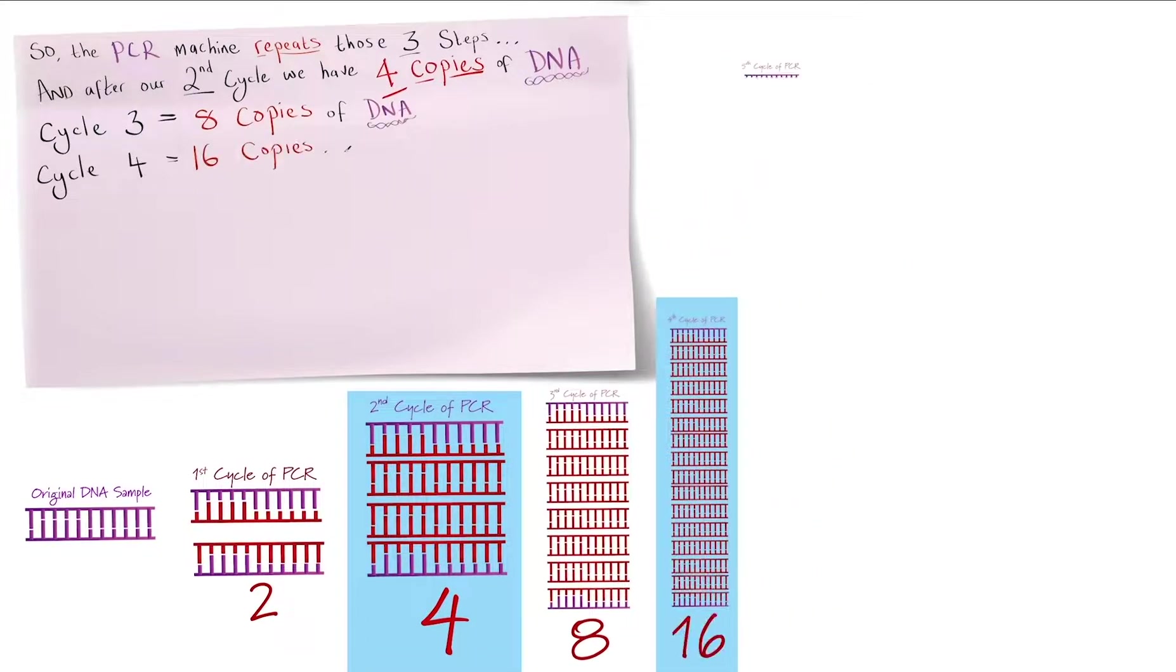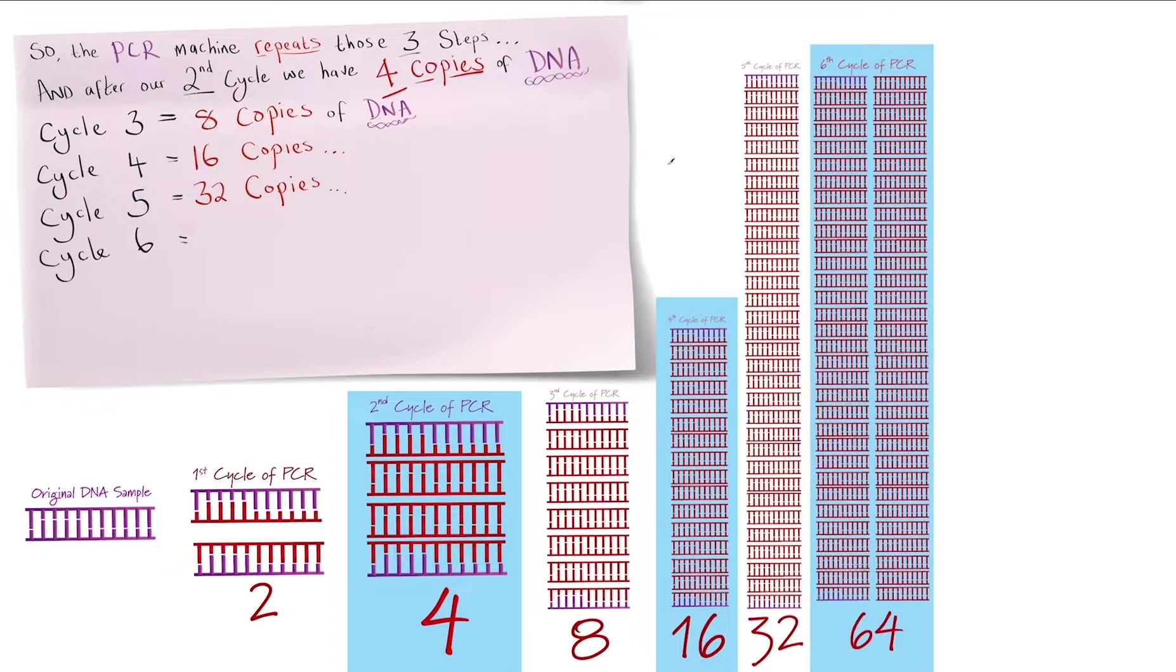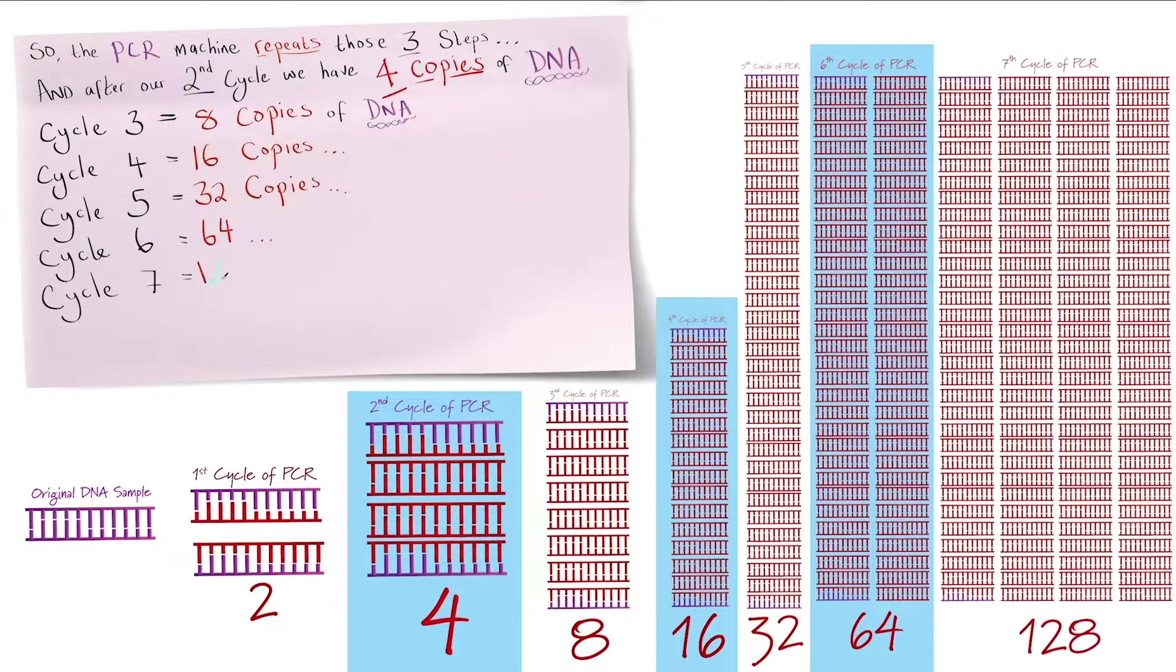Cycle four, 16 copies. Cycle five, 32. Cycle six, 64. Cycle seven, 128. You get the idea.